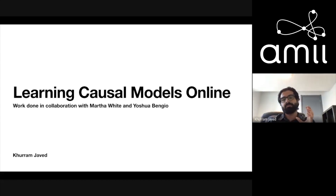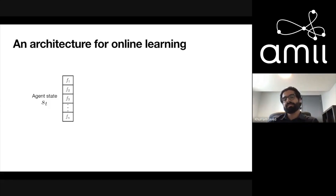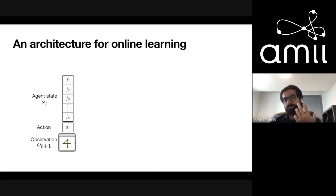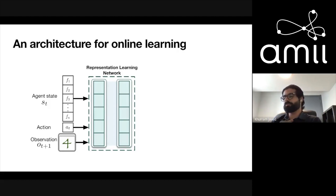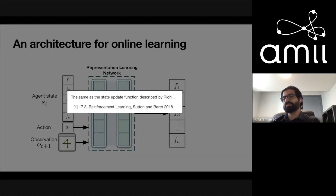Before I dive into the ideas, I first want to give an overview of the online learning problem. Specifically, I'm going to give an architecture that I use to think about the problem. At time step t, the agent has a state s_t, takes an action, gets an observation from the environment describing the next time step, and all this goes into a function approximator I call the representation learning network. The output will be the state of the agent at the next time step — this is exactly the same as the state update function that Rich talks about in his book.